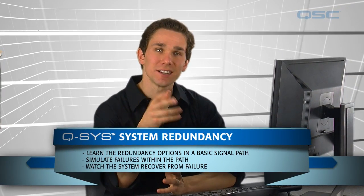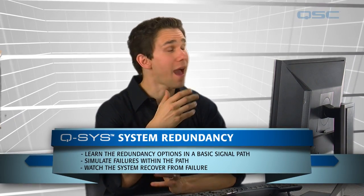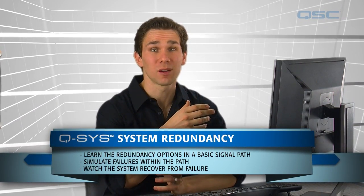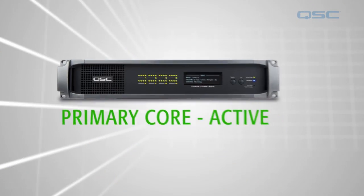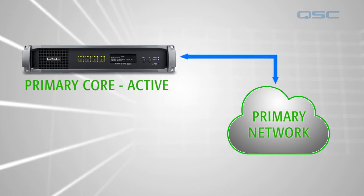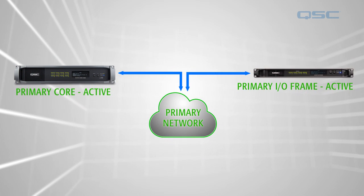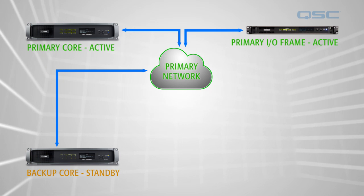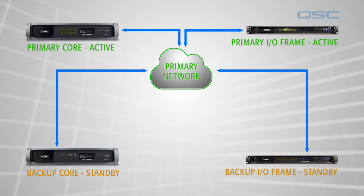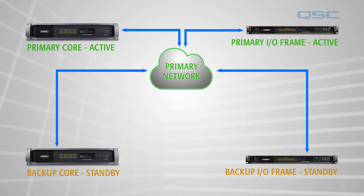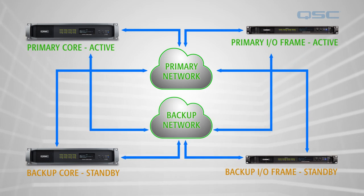Now let's talk about some of the redundancy options in your Q-SYS system and show you how quickly the system can recover from a hardware failure. In a basic signal path, your core is connected to your network through which it communicates with any I/O frame. You can have a backup core on your network as well as a backup I/O frame. And since every core and every I/O frame has two Ethernet ports, you can also employ a backup network as well.